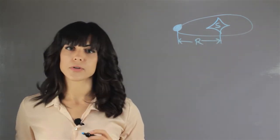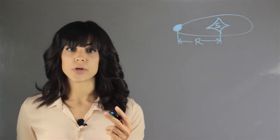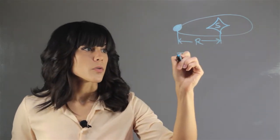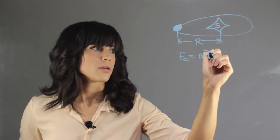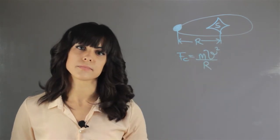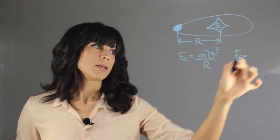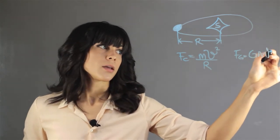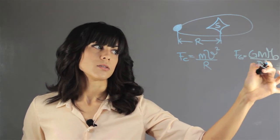The next thing we need to know is how do we figure out the orbital velocity. The two things we need to know are the centripetal force and the gravitational force. The centripetal force is the mass of Mercury times the velocity of Mercury squared, divided by this distance r. The gravitational force between Mercury and the Sun is the gravitational constant G, the mass of Mercury, times the mass of the Sun, divided by r squared.